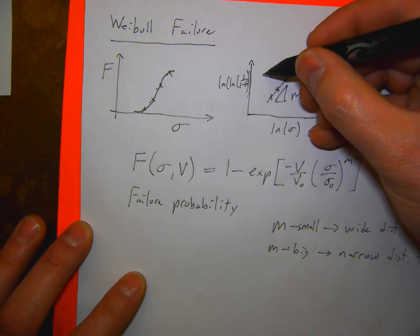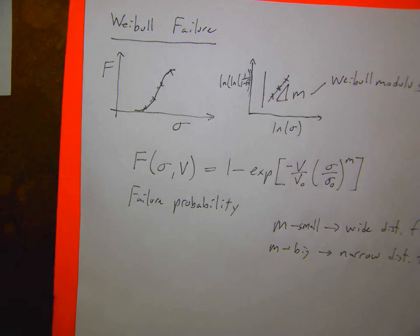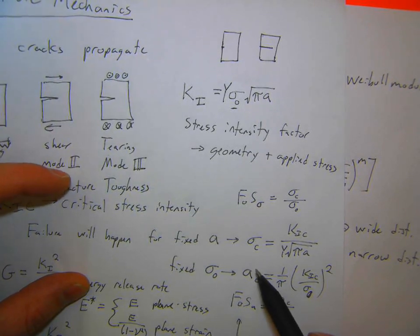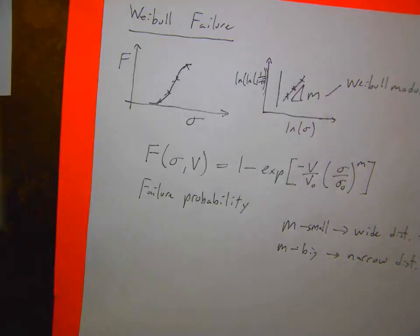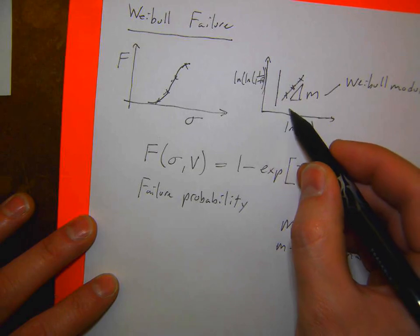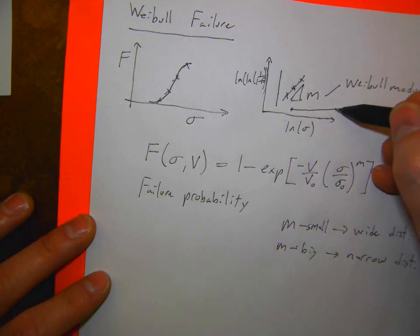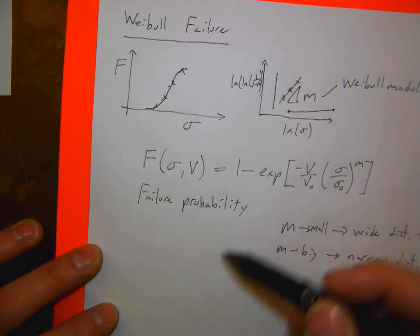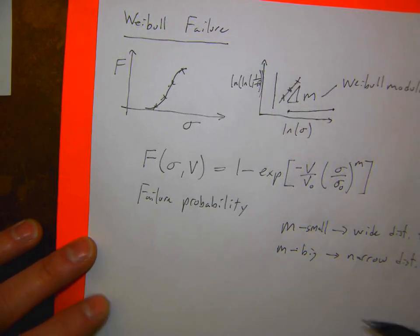The failure probability is F = 1 − exp(−(V/V₀)(σ/σ₀)^M). The Weibull modulus M defines how wide the distribution of flaws is. If M is infinite, you'd have exactly one flaw size — you could deterministically predict failure. In real materials, a distribution of flaws means a distribution of critical stresses. If M is very low, there's a very wide distribution — some probability of very big or very small flaws causing failure at low or high stresses.